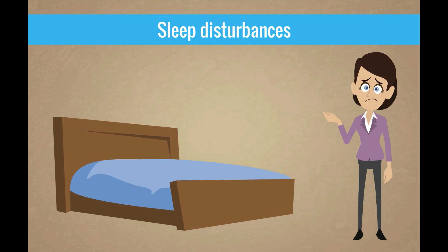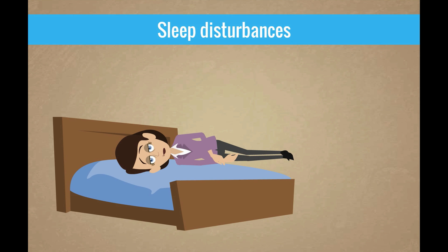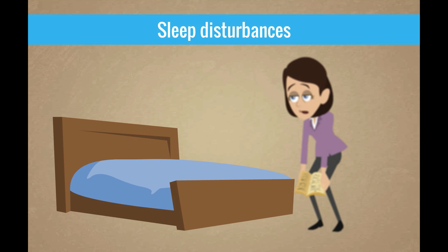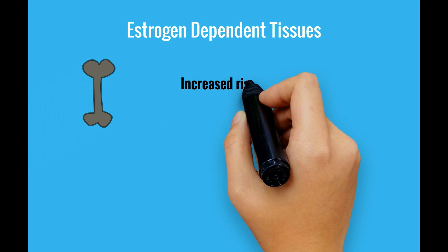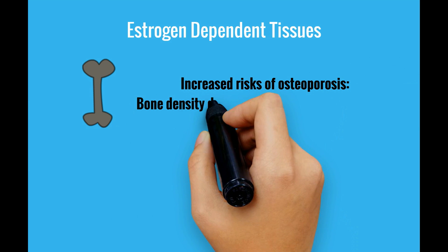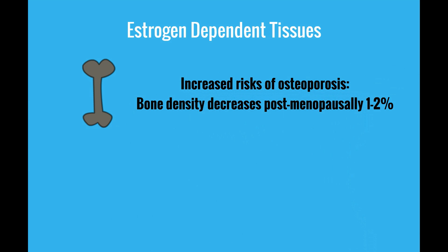Declining estrogen levels can induce changes in women's sleep cycles independent of hot flashes, and sleep disturbances are one of the most common and disabling effects of menopause. Bone density decreases in both men and women with aging; however, the rate of bone loss increases with menopause. Bone density diminishes at a rate of 1 to 2 percent per year in postmenopausal women compared with 0.5 percent per year in perimenopausal women.